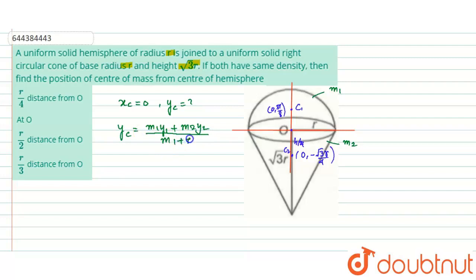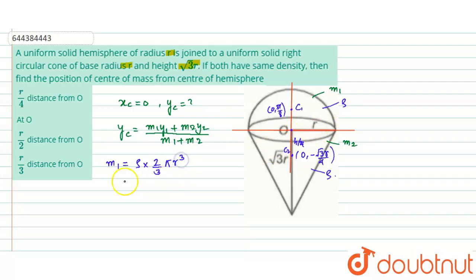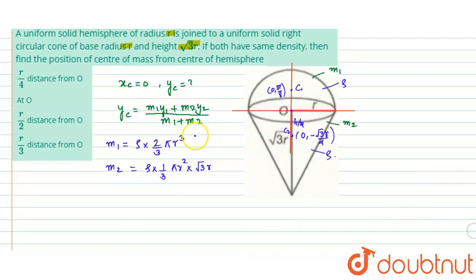We don't know the masses, but both have the same density ρ, so we can find them. Mass of the hemisphere = ρ × (2/3)πr³. Mass of the cone = ρ × (1/3)πr²h, where r is the base radius and h = √3r.